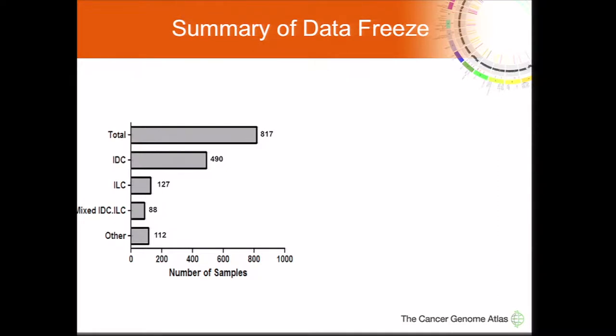We first developed our data freeze with 817 samples. Importantly, the pathology of each sample was re-reviewed by a group of pathologists led by Andy Beck at the TCGA. Of these 817 samples, 490 are ductal, 127 are lobular, 88 have a mixed histology, and 112 patients have other histologies.